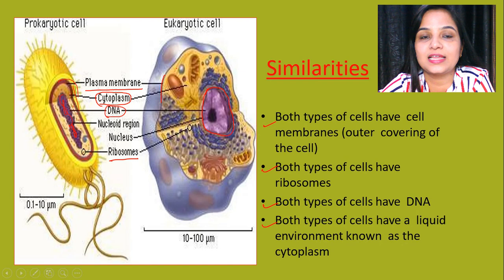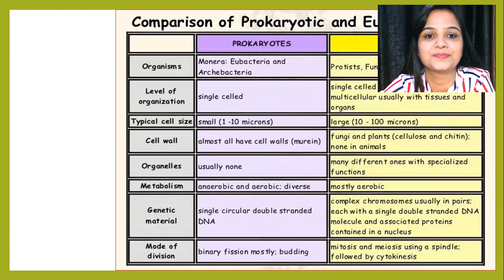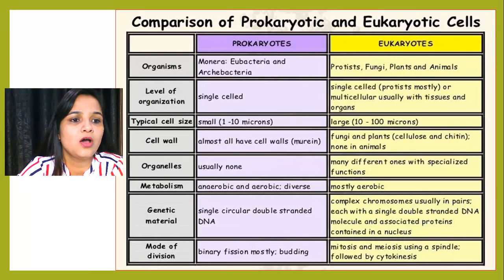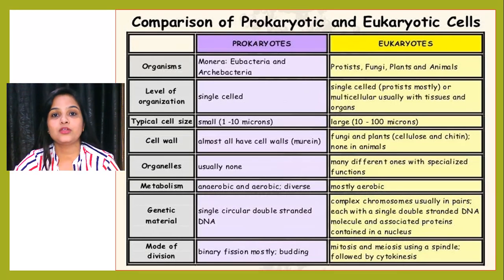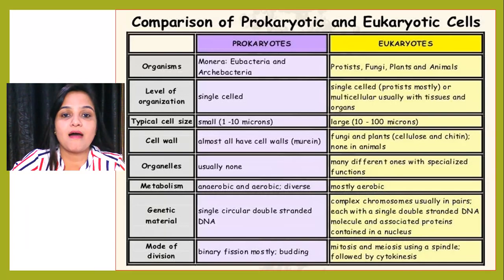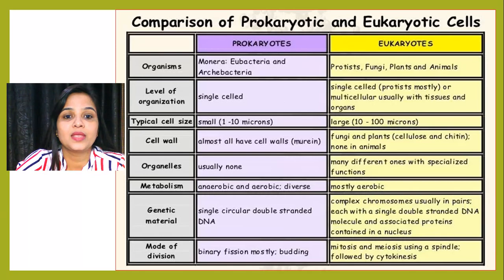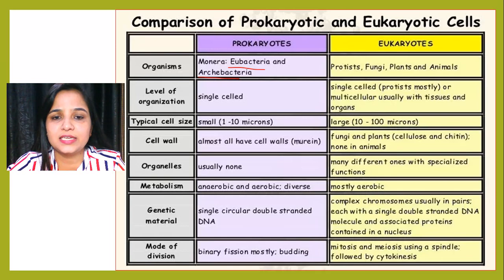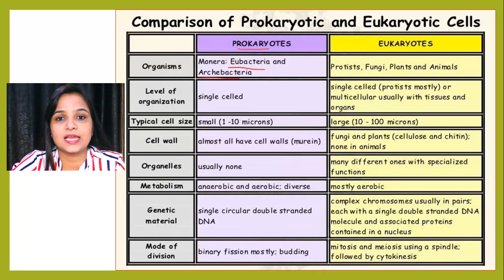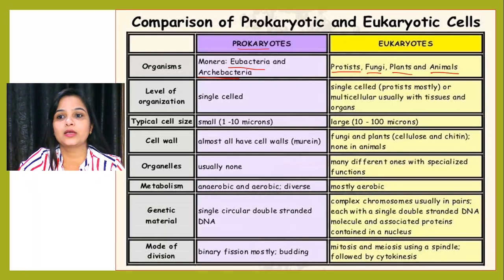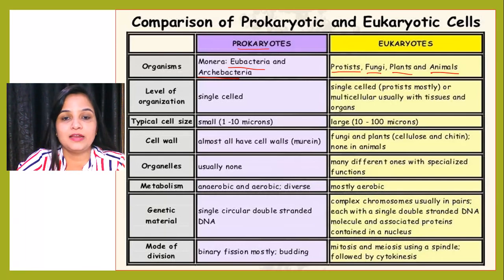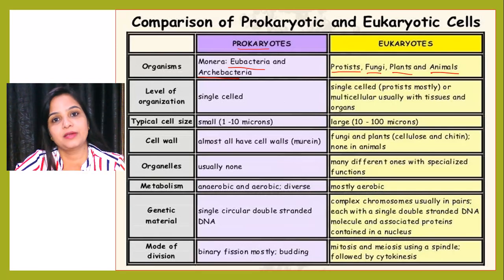Now let's come toward the differences between prokaryotic and eukaryotic cells. Before starting the comparison, we must know which organisms are prokaryotes and which are eukaryotes. When we talk about prokaryotes, they are Monera — just like eubacteria and archaebacteria — or you can say all types of bacteria come under prokaryotic cells. When we talk about eukaryotes, it includes protists, fungi, plants, and animals — a very big, huge group. So eukaryotes have a very big family, and prokaryotes also have a large family, but they are different from each other.